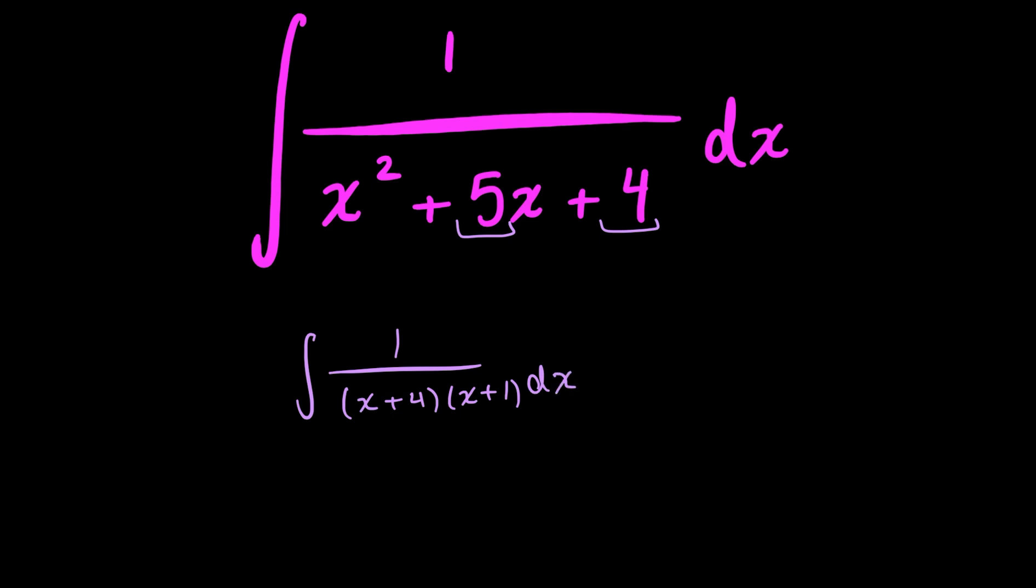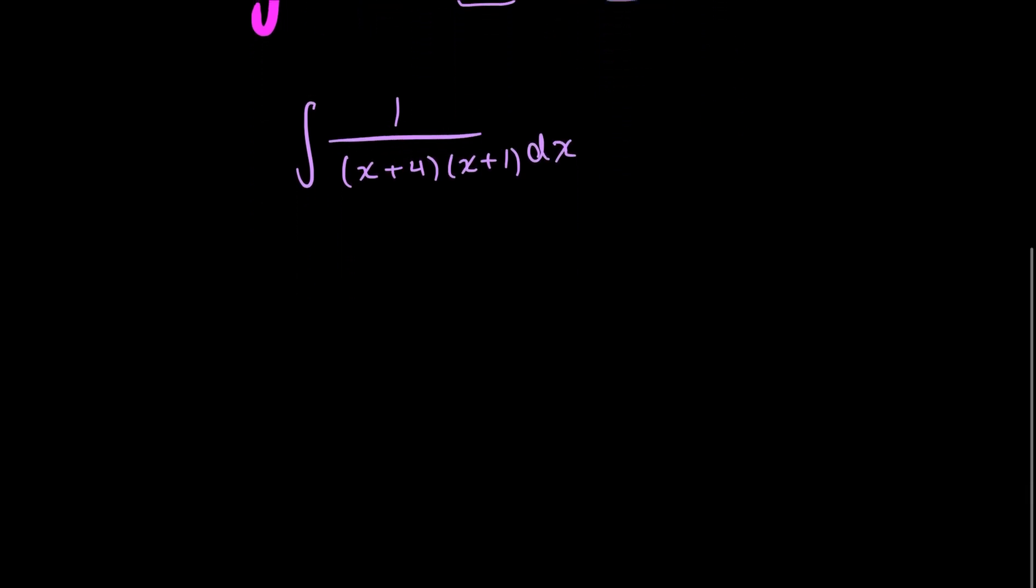Now I can start decomposing. So I'd create two fractions that, when I add them together, give me back this result. So I don't know what the two fractions are, I mean the numerator of the two fractions are, so I'd plug in an unknown constant for the moment. So this is what my integral looks like.